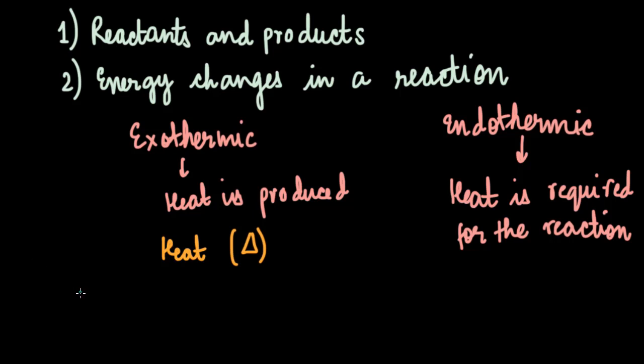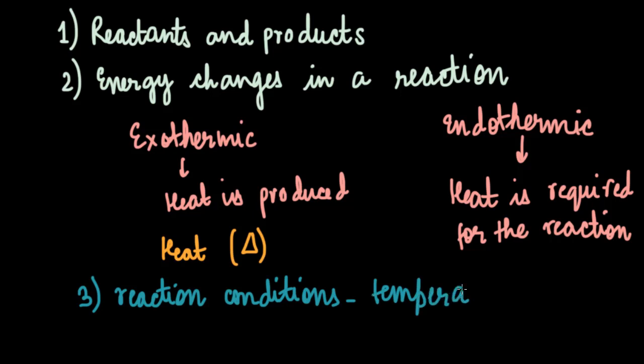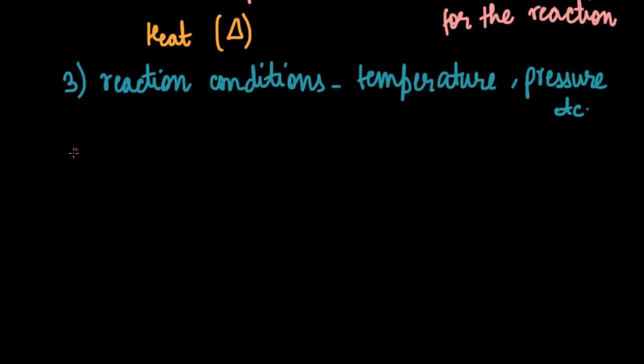The third thing that a chemical equation conveys is the reaction conditions. Some of the reactions take place only under special conditions of temperature, pressure, etc. So this information can also be denoted on the arrow when we are writing a chemical equation.